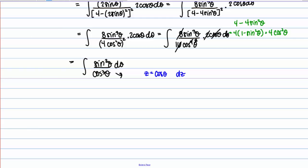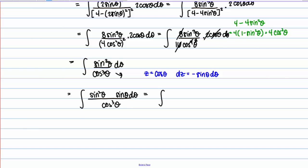The derivative of cosine is negative sine, so dz equals negative sine of theta d theta. On the top we have 3 factors of sine of theta, so this doesn't immediately substitute cleanly. But we can use a trick from trigonometric integrals: set aside one factor of sine of theta d theta to serve as dz, leaving sine squared of theta. Then we rewrite sine squared of theta using the Pythagorean identity as 1 minus cosine squared of theta. This gives us an integral that works with the substitution.